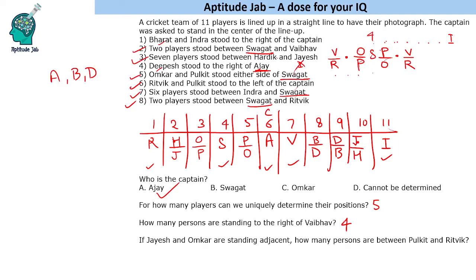If Jayesh and Omkar are standing adjacent, how many persons are between Pulkit and Rithvik? Jayesh and Omkar can be adjacent in this arrangement, placing Jayesh next to Omkar. With this configuration, Omkar's adjacent position determines Pulkit's spot, and counting the people between Pulkit and Rithvik gives three persons in between. That's the solution to this set. If you liked the set, please do like the video.